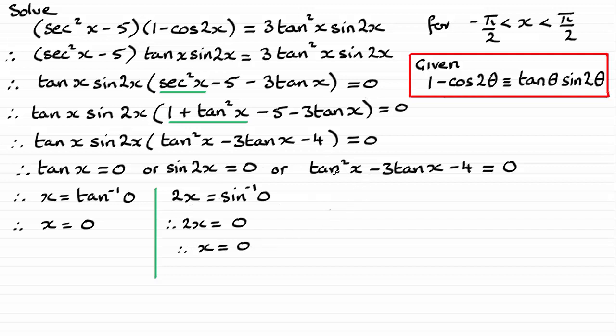Now, for the quadratic in tan x, I need to factorise this. And it factorises very easily to tan x plus 1 times tan x minus 4 equals 0. And that would mean that each of these factors would equal 0, leading to tan x equals negative 1 and tan x equals 4.